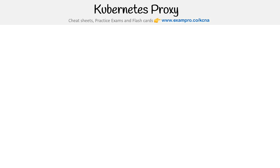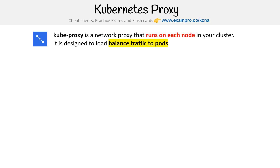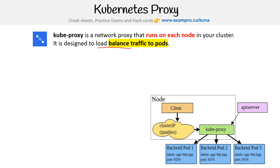Hey, this is Andrew Brown from Exam Pro. We are looking at Kubernetes proxy. Kube proxy is a network proxy that runs on each node in your cluster, and it's designed to load balance traffic to pods.